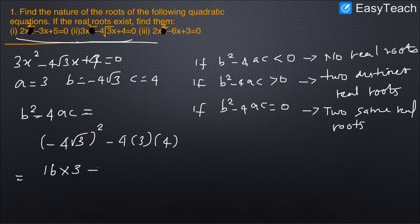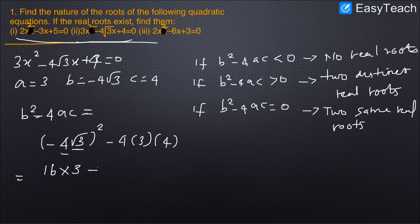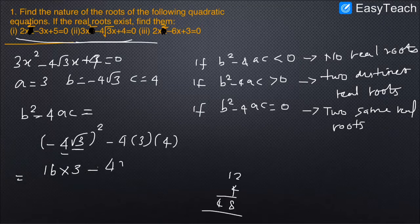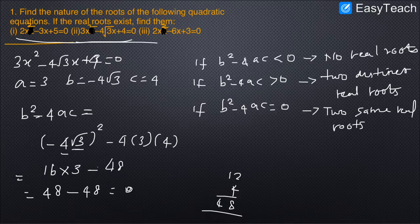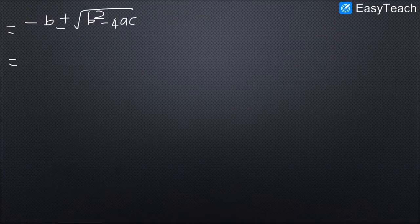(-4√3)² = 16×3 = 48, and 4×3×4 = 48. So b²-4ac = 48-48 = 0. Since the discriminant is exactly 0, the nature of the roots is two equal real roots.